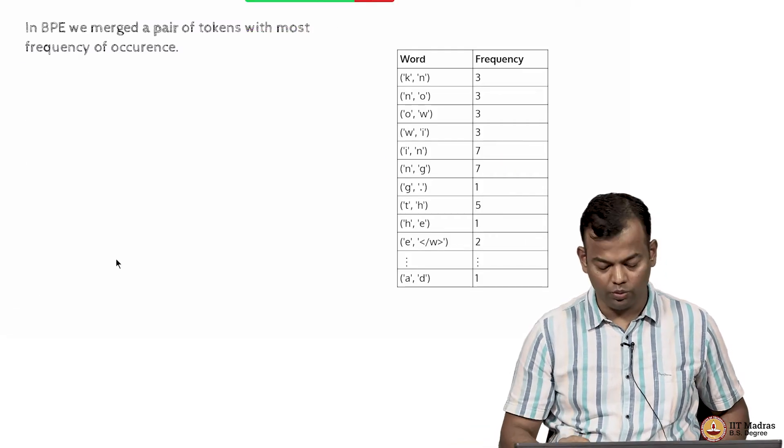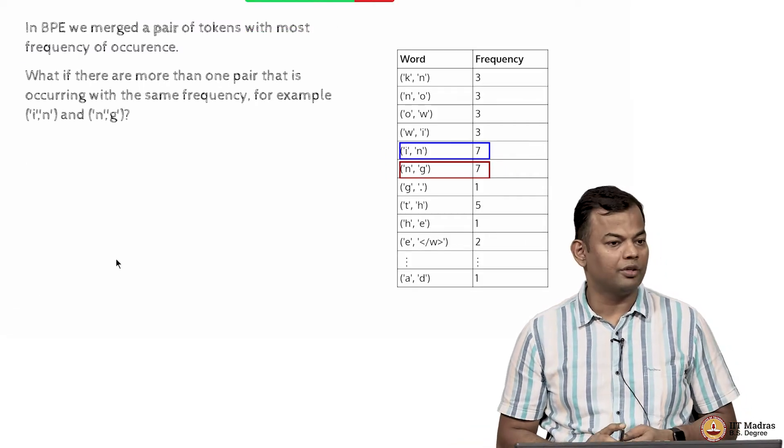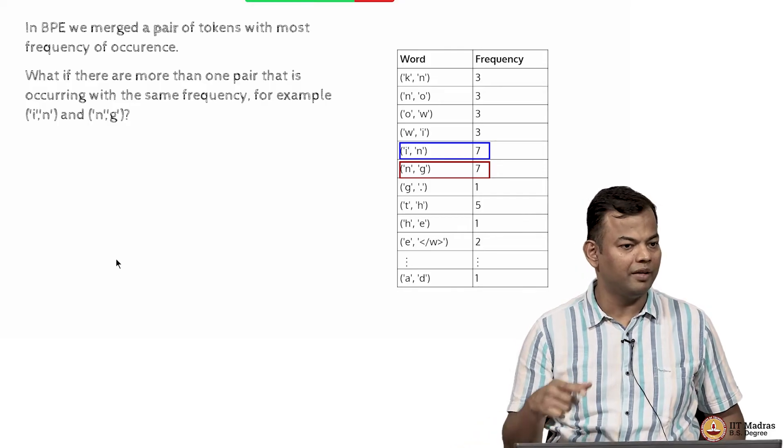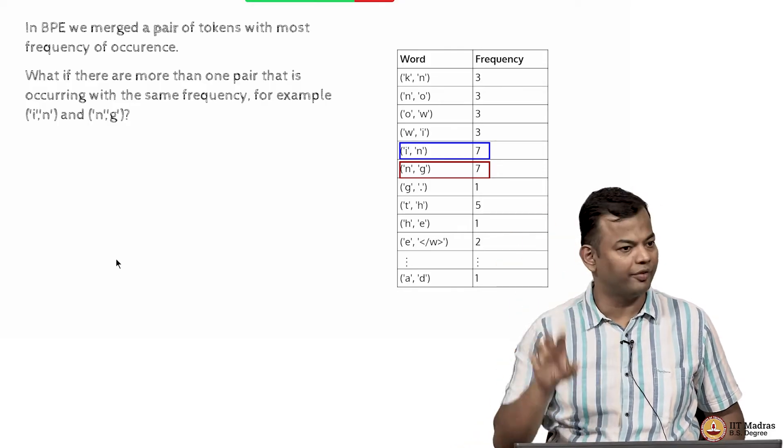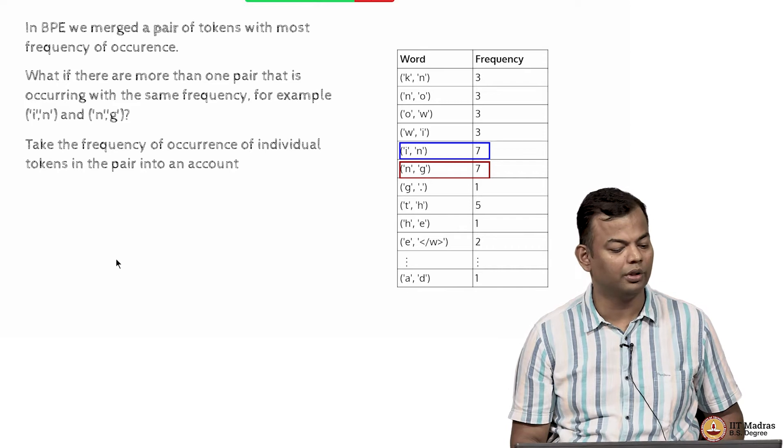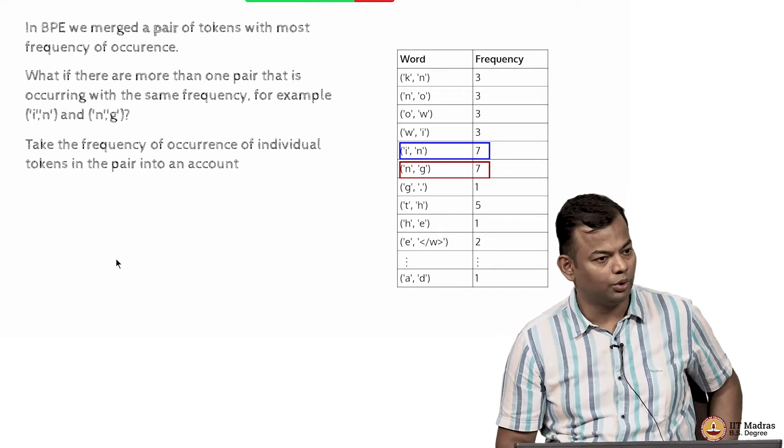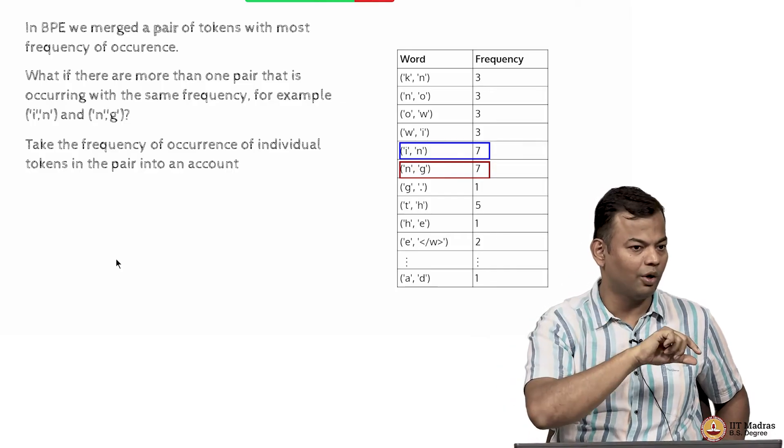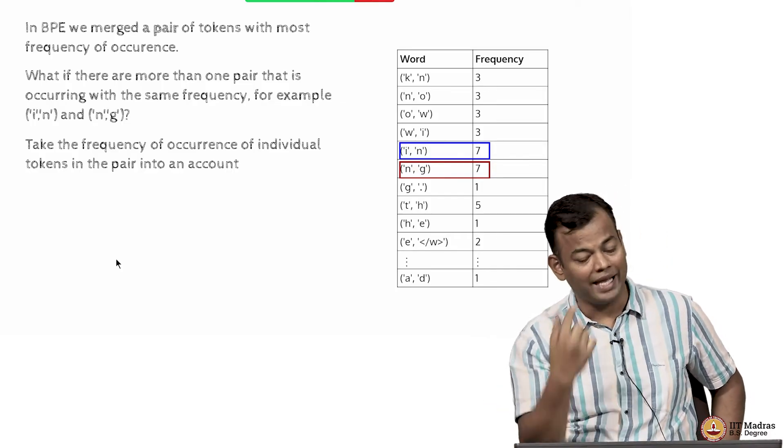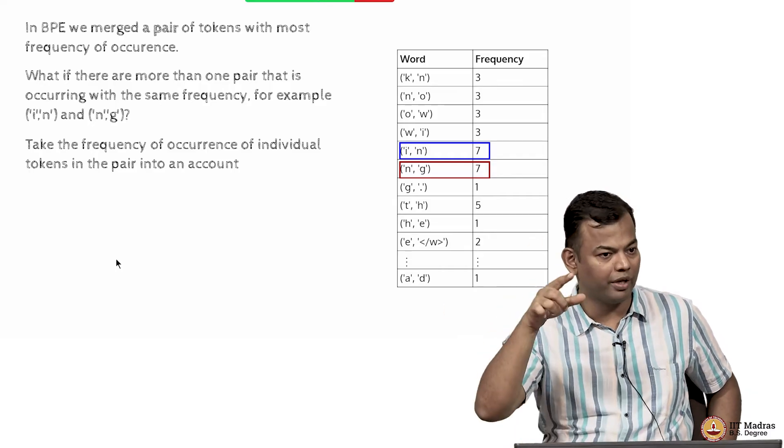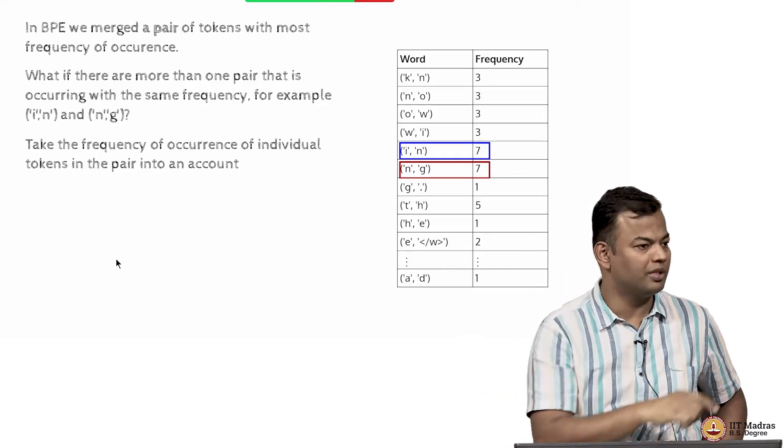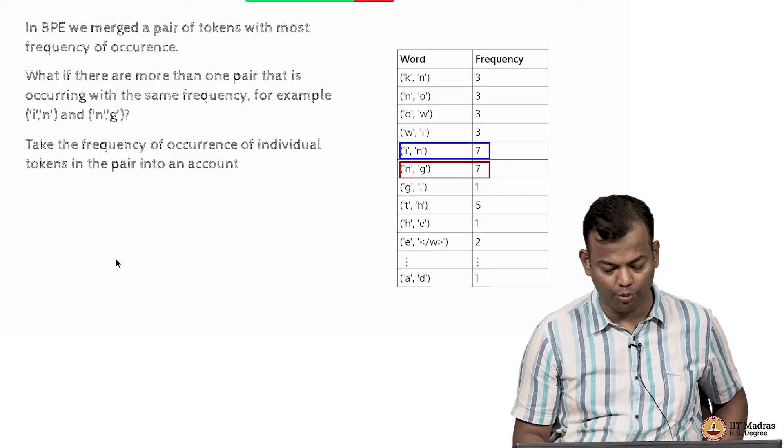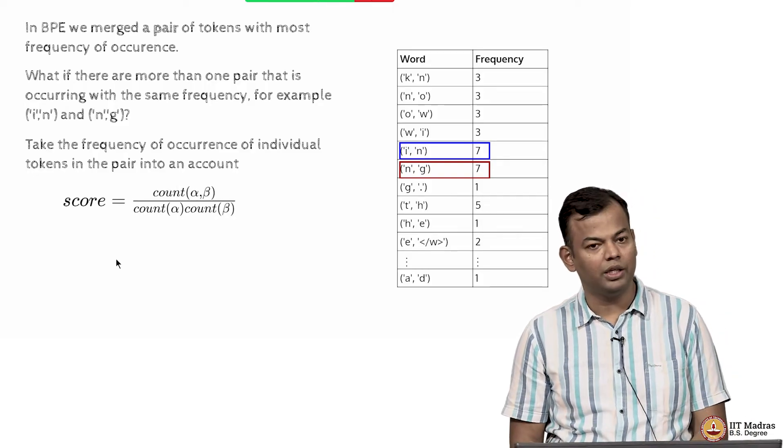But what do you do in the case of a tie? In BPE when there was a tie we just took the first one and added it to the token list, but that has implications on what happens next. If IN got merged versus if NG had got merged, that would have a different path going forward. So that is important to see how to break that tie.